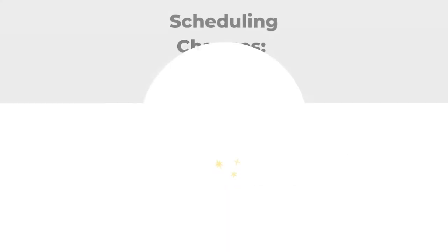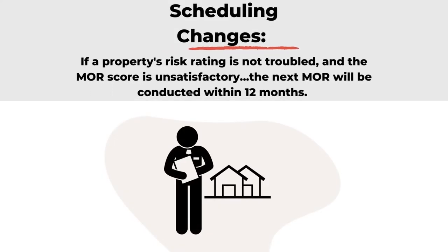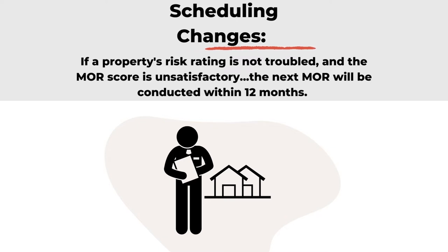If a property's risk classification is not troubled, and if the score on the MOR conducted on or after the effective date of 9-26-2022 is unsatisfactory, the next MOR will be conducted within 12 months.